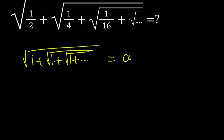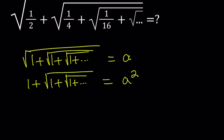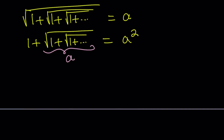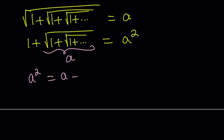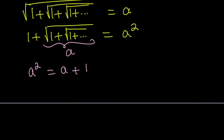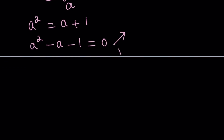We're going to square both sides. The outer radical disappears, and we end up with 1 plus the square root of 1 plus the square root of 1 plus dot dot dot equals a squared. Notice that after squaring both sides, we are getting a again — this part is the same as a. So we get a quadratic: a squared equals a plus 1, or a squared minus a minus 1 equals 0.